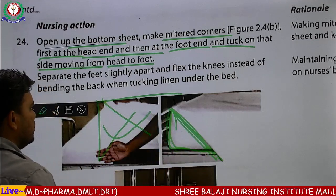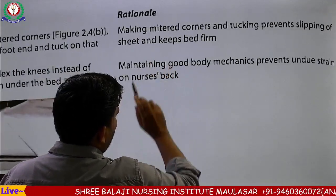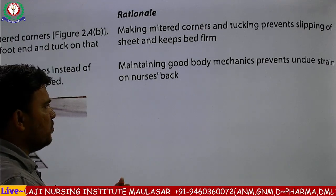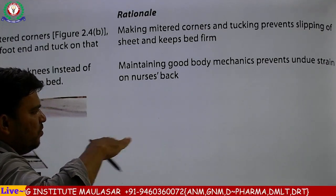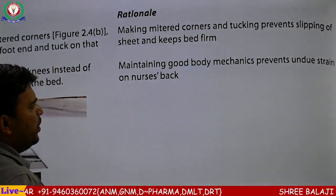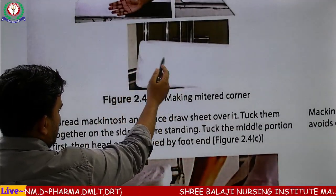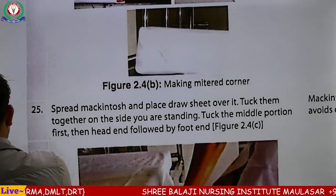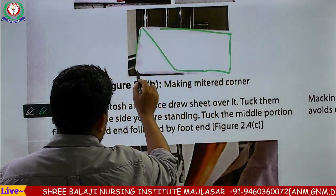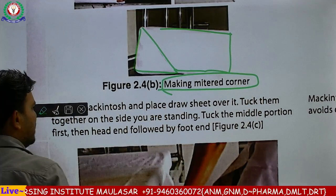यह triangular shape दर्शाता है कि यह सही तरह से tucking की गई है, bed sheet सही तरह से fix हुई। Rationale: making mitered corners and tucking prevents the slipping of the sheets। Keep the bed frame — good body mechanism — prevents undue strain on the nurse's back। इस तरह से bed का एक position में बन जाएगा — यह bed sheet में यह safe बना हुआ है — यहाँ से tuck की गई है — इसको कहते हैं making mitered corners।